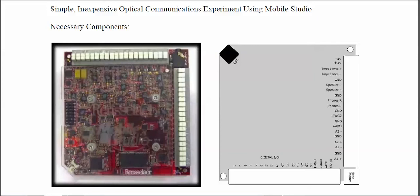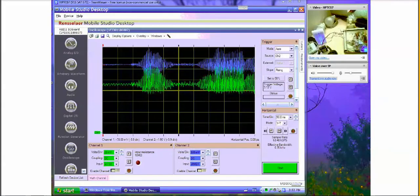If you have a Mobile Studio, you have access to what I think is the simplest, least expensive optical communications demo or experiment that exists anywhere. With a mobile studio, as shown here, you need a very small number of components and you can build something that is really simple and clearly demonstrates that you can send information on an optical signal — in this case, an audio signal.